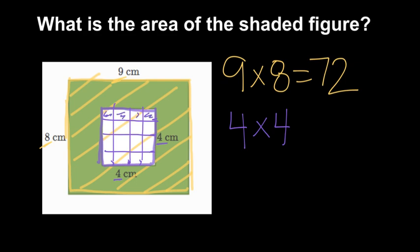This top row, one, two, three, four, and so on. Four rows, so there's 16 square centimeters we need to cut out of the 72.